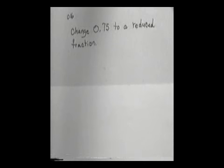The first thing we're going to do is change 0.75 to a reduced fraction. So when we look at this, the 0 tells us we don't have any whole numbers, so we won't write any whole numbers down.